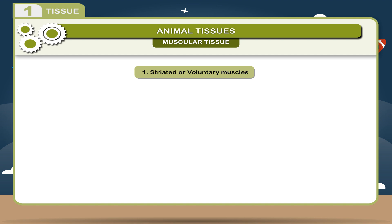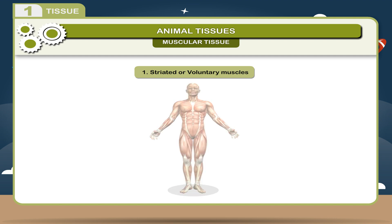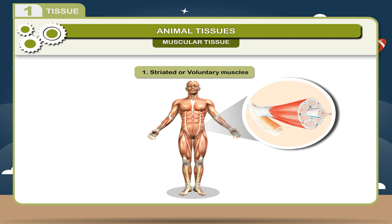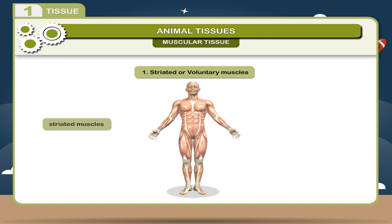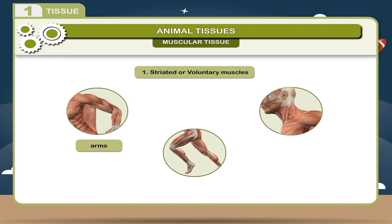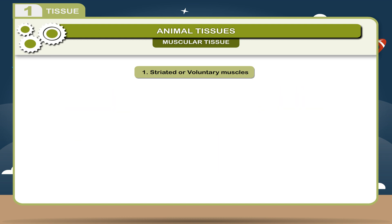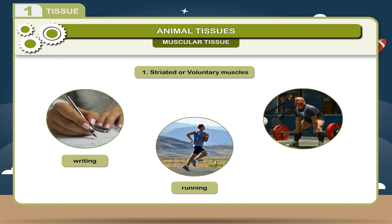1. Striated or Voluntary Muscles: These muscles are attached to the bones. They are composed of cylindrical fibers with transverse striations on them, and are also called striated muscles. They are found in arms, legs, neck, etc. When required, they help in writing, running, and working, and are therefore called Voluntary Muscles because they are under our control.